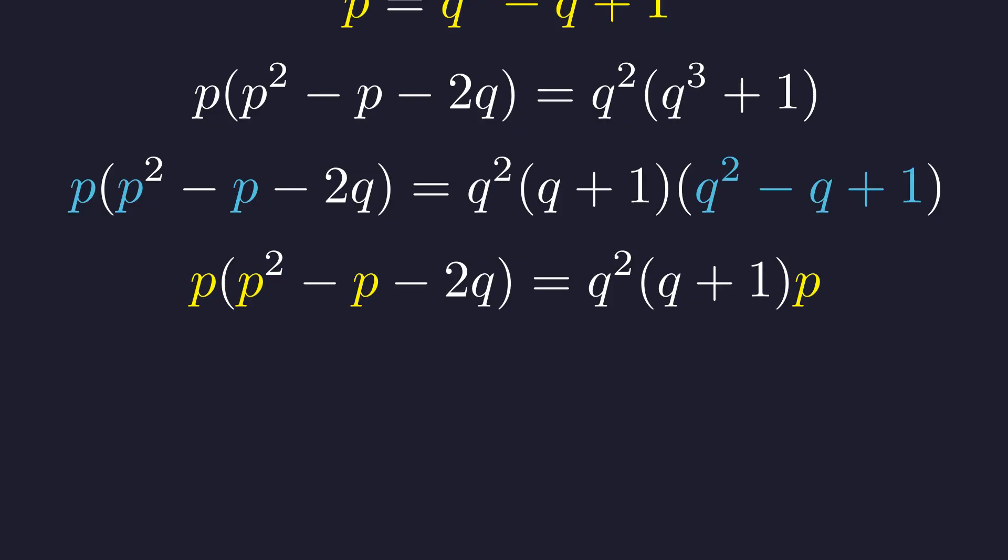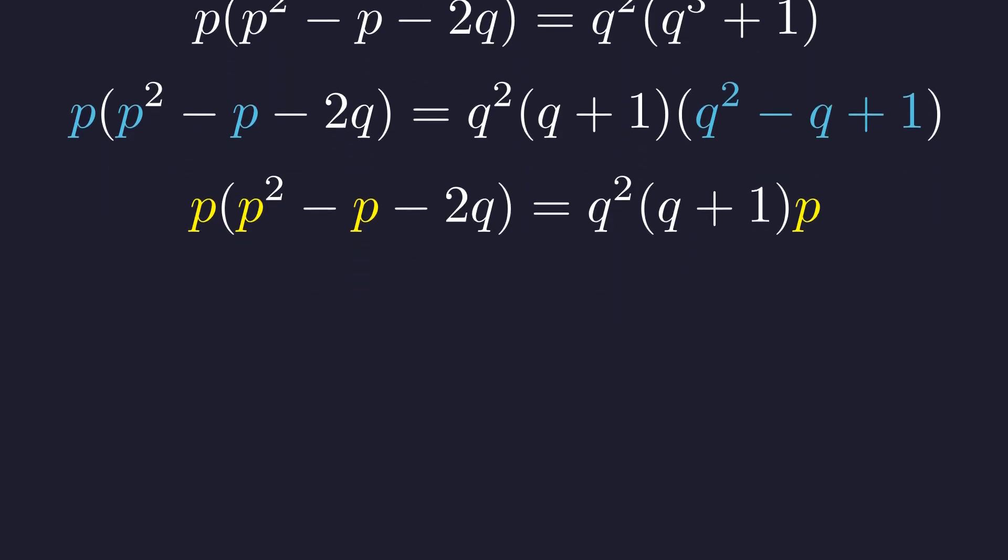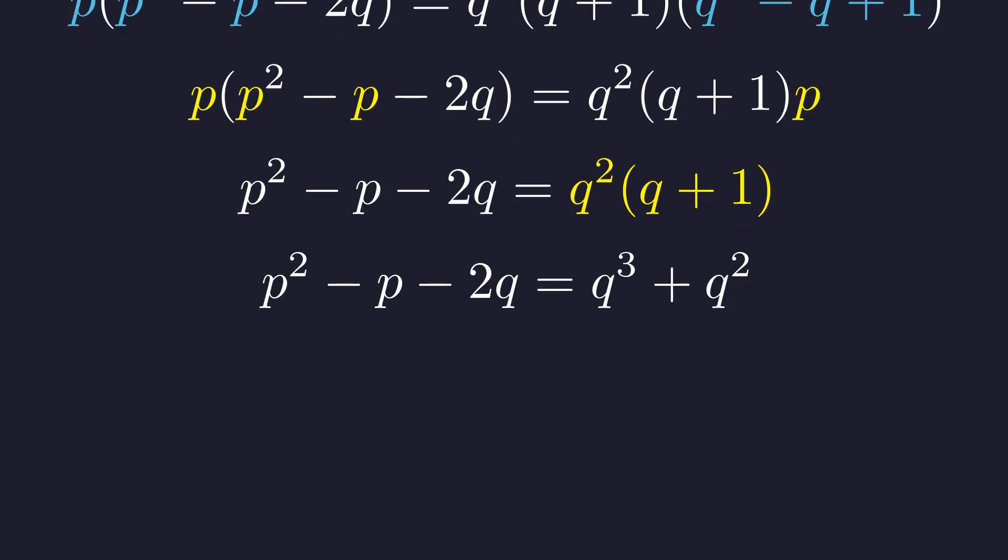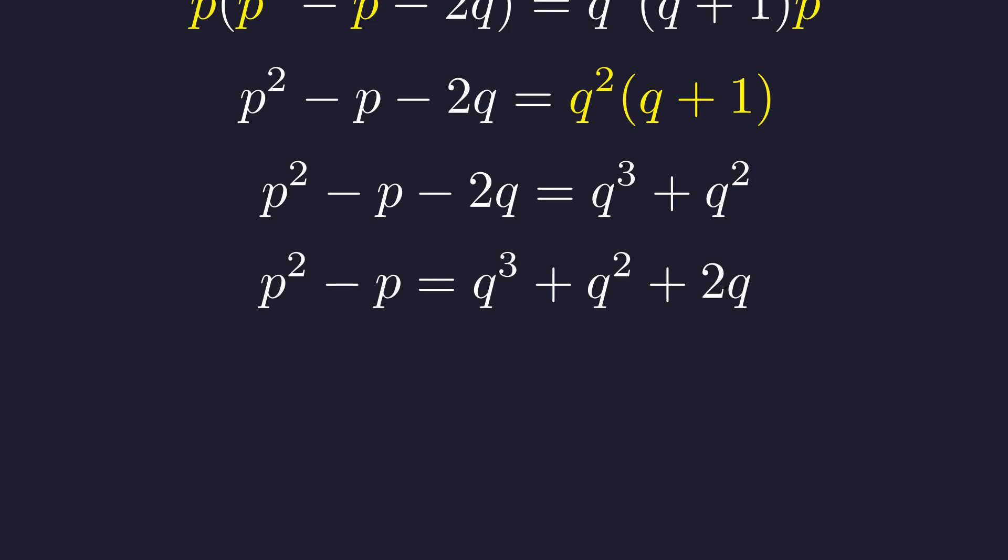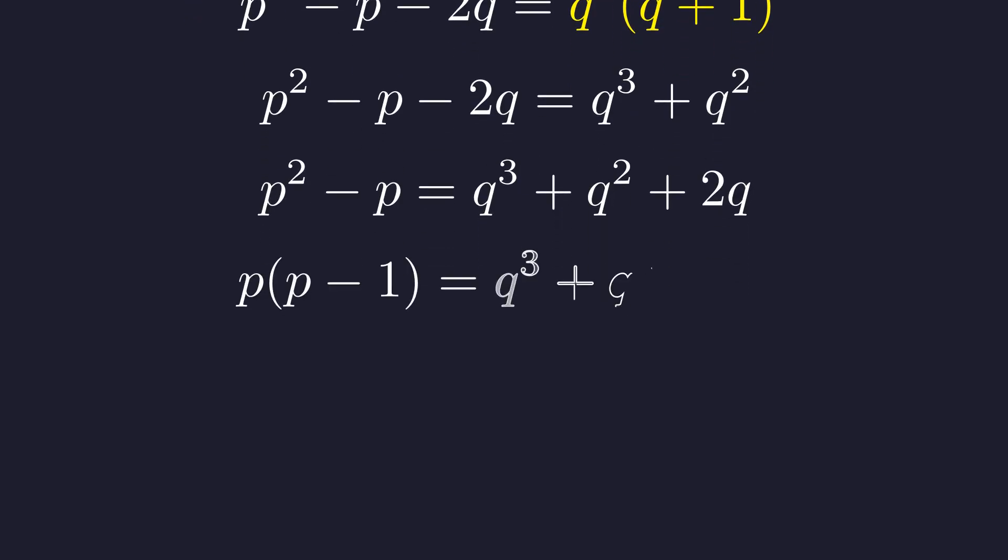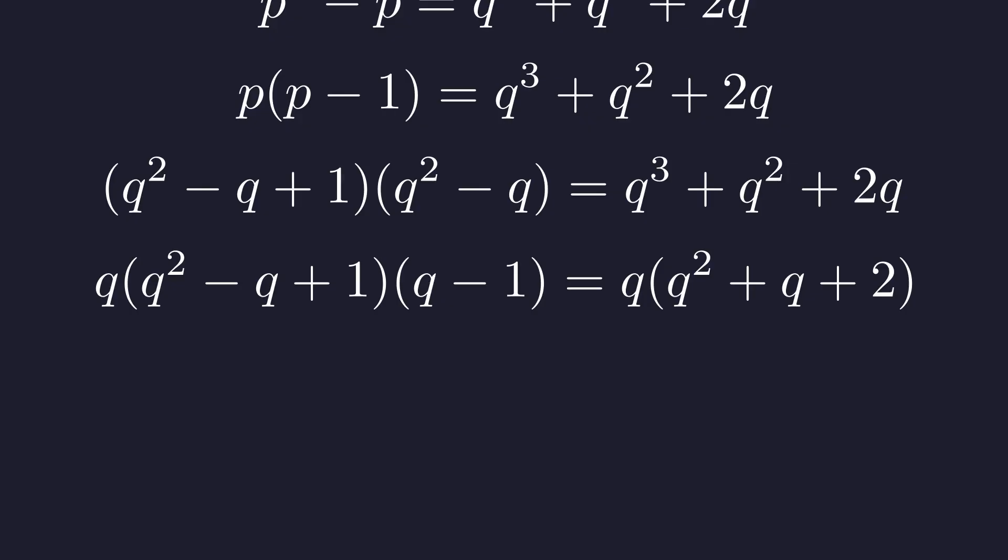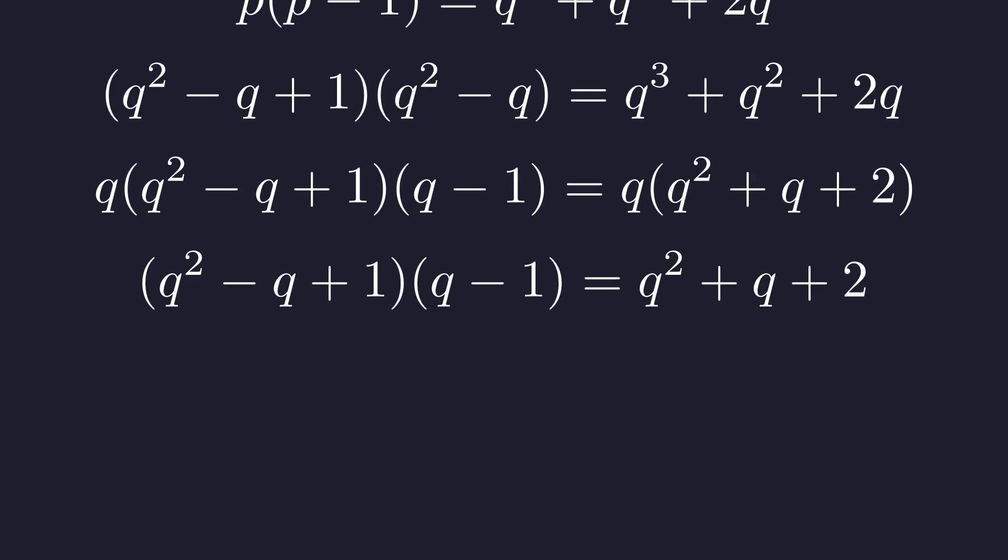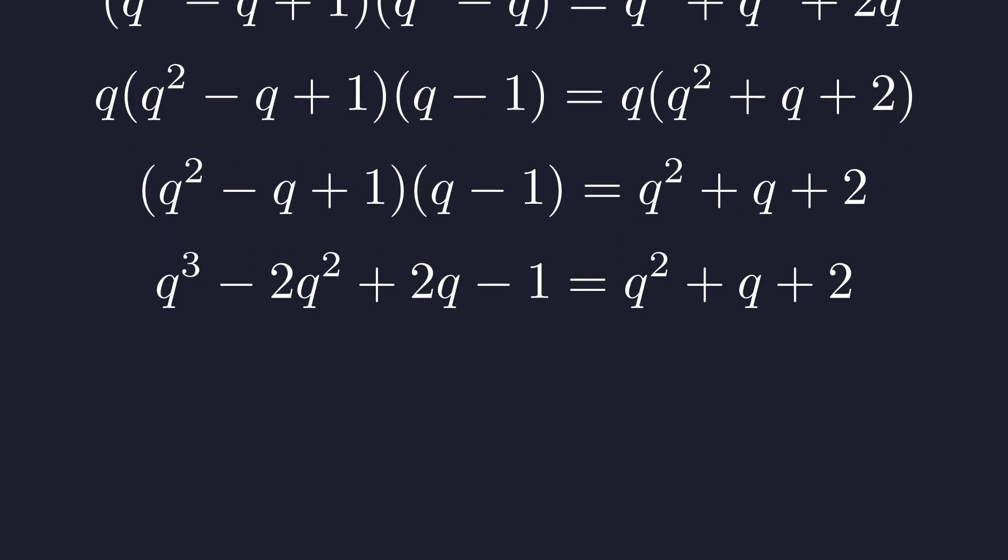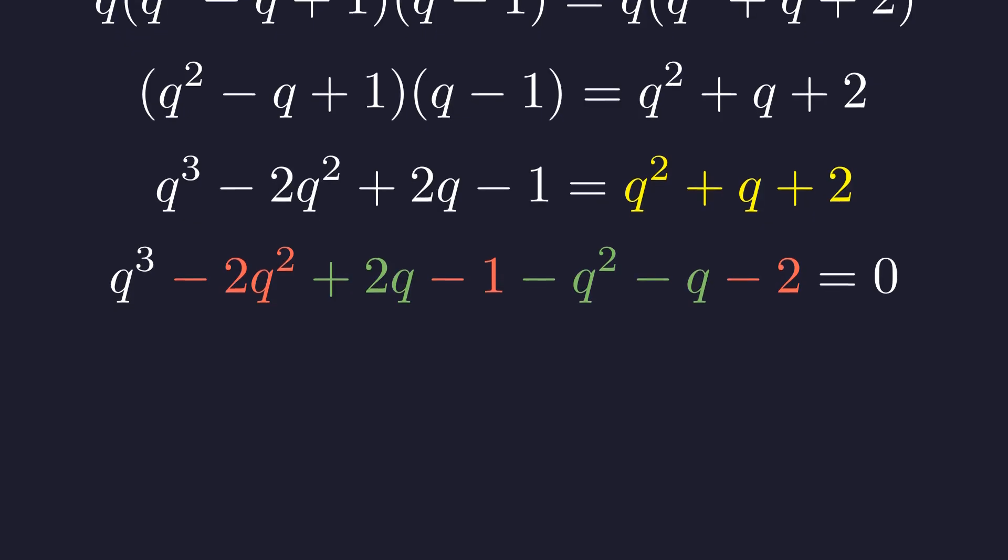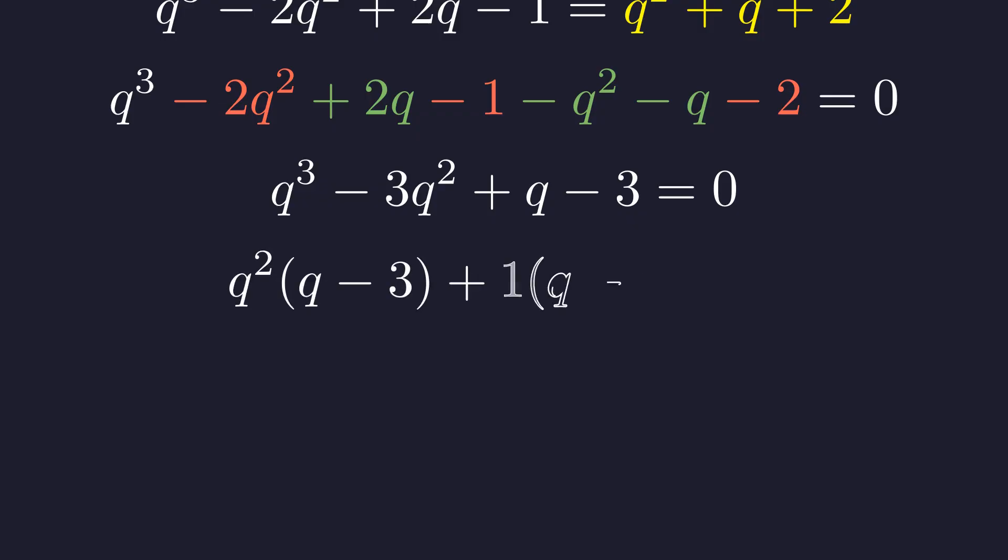Since p is a prime, it is non-zero. This means we can divide both sides by p. This simplifies our equation significantly. Let's expand the right side to get a clearer polynomial form. Distributing the q squared gives q cubed plus q squared. Now, adding 2q to both sides isolates the p terms. Now, for the final substitution, we replace p with q squared minus q plus 1. This gives a polynomial equation solely in terms of q. We can factor out a q from both sides. Since q is a prime, it is non-zero, so we can divide by it. Expanding the left side yields this cubic equation. To solve this polynomial, we will set the entire expression equal to 0 by moving all terms from the right side to the left. This prepares the equation for simplification. Now, we combine the like terms. This gives us the simplified cubic equation. This polynomial can be factored by grouping.